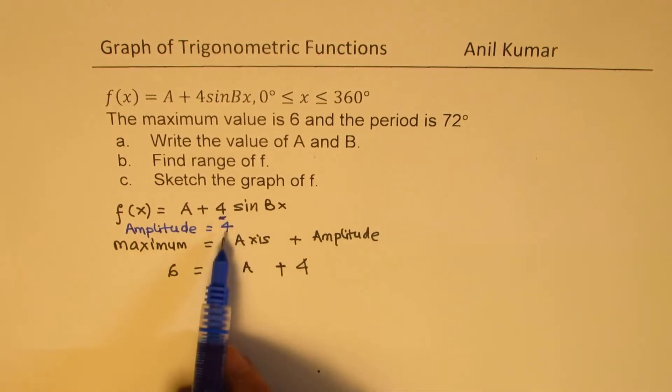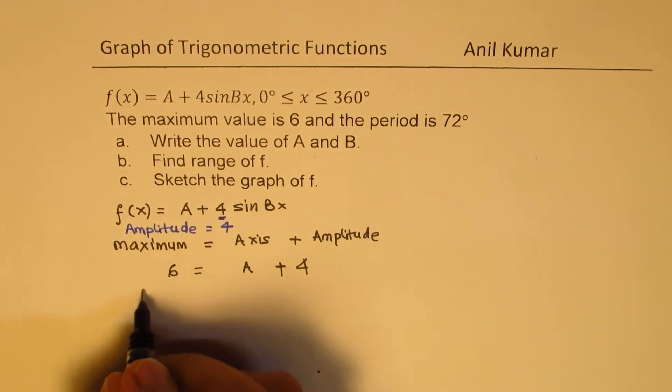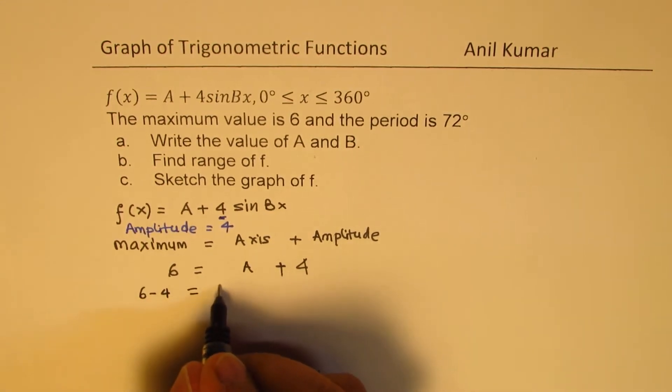Coefficient of sin Bx, that is amplitude. So, we get from here, 6 minus 4 equals axis. So, the value of A is 2. Is that clear to you?